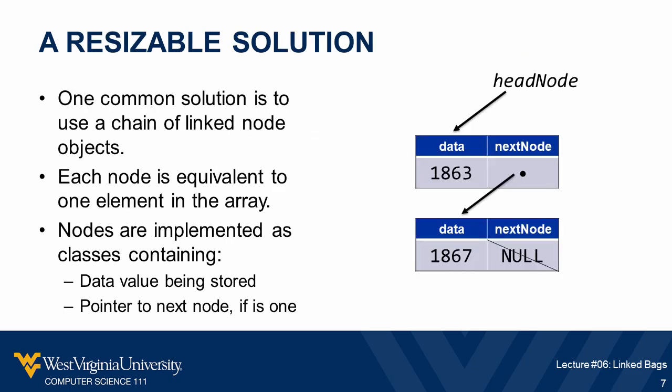A more flexible way for us to implement data structures is to use what's known as a node. A node is an instantiated object of a class that we're going to call Node. The Node class is pretty simple - it really just has two fields. One field stores the data we want to store, and each node is basically equivalent to one element in an array. The other field keeps track of where the next node in our chain is located.